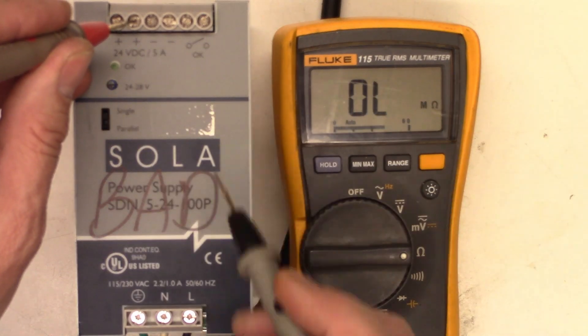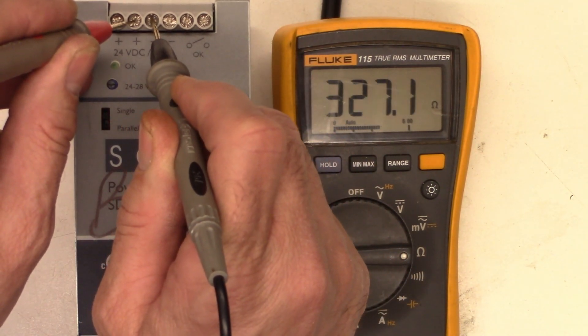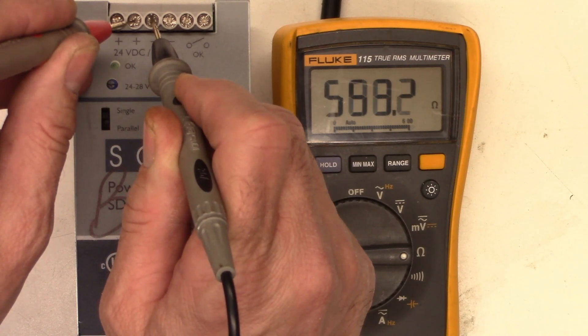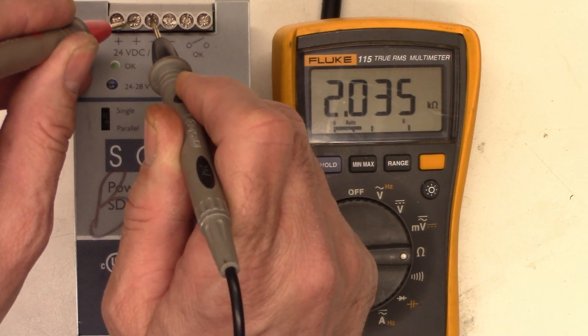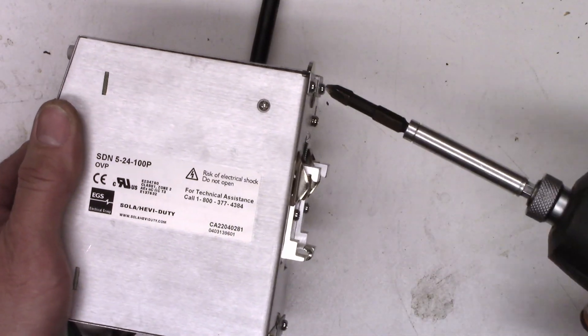So I can go on the ohm scale and check and see if I have a short here. And as you can see it's charging. So I know there is no short. It's charging the output filter capacitors. So let's go ahead and disassemble it and get into it and see if we can find out what is going on in here.